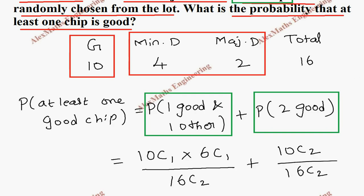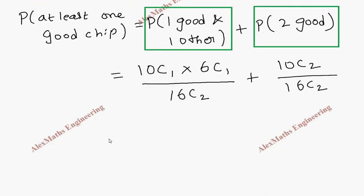Now coming to the calculation: 10C1 is 10, 6C1 is 6, plus 10C2 which is 10 into 9 by 1 into 2. Both have a common denominator, so we can write it as a single denominator. 16C2 is 16 into 15 by 1 into 2.